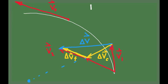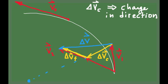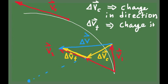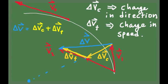Notice that the change in velocity vector can be split into two components. Delta vc is the component of the change in velocity that has to do with the fact that the velocity vector is changing in direction, because the object is moving in a circle. The second component is delta vt, which is the part of the change in velocity that has to do with the change in speed — the fact that the object's speed is changing. So the total change in velocity vector for non-uniform motion is broken into two pieces: one that is centripetal, and one that is tangential.